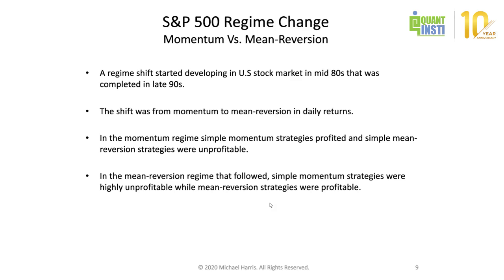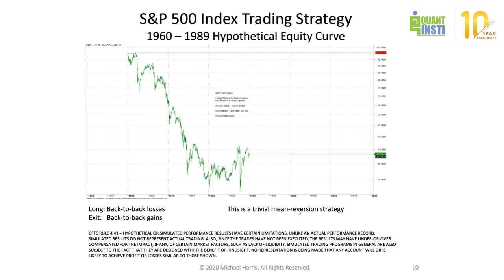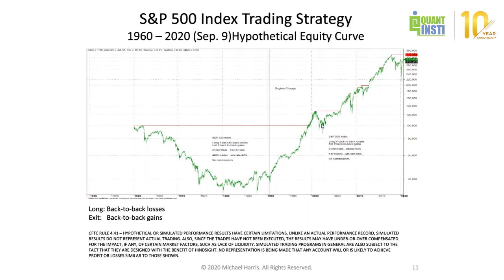Let's look at a trivial mean-reversion strategy: go long if there are back-to-back losses and exit if there are back-to-back gains — two days down you go long, two days up you exit. This was a highly unprofitable strategy until about 1990, but then it became highly profitable until the recent pandemic crash.